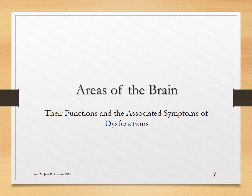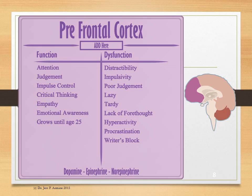Areas of the brain and their associated symptoms of function and dysfunction. The prefrontal cortex — ADD tends to live here. The function of the prefrontal cortex is attention, judgment, impulse control, empathy, critical thinking, and this area grows until age 25. A dysfunctioning prefrontal cortex will give you distractibility, impulsivity, poor judgment, laziness, tardiness — everything that one calls a teenager — because the teenage brain has not fully developed its prefrontal cortex. The neurotransmitters that are active in this area are dopamine, epinephrine, and norepinephrine.